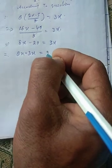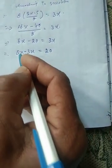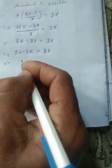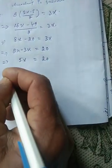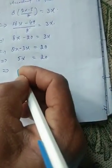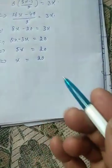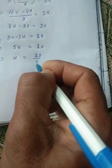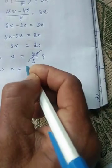Transposing to the right side gives plus 20. The actual value of x: 8x minus 3x is 5x is equal to 20. Dividing by 5, we get x is equal to 4.